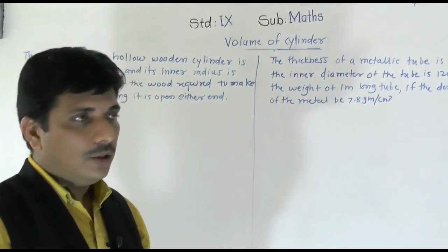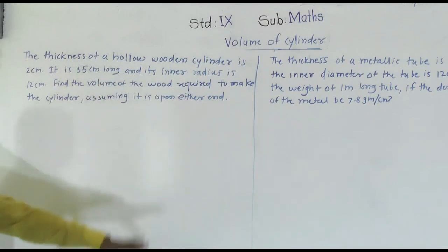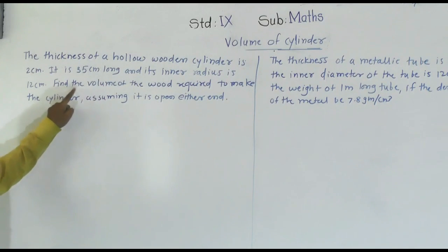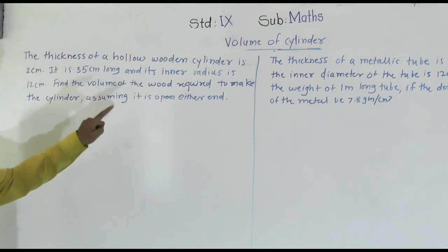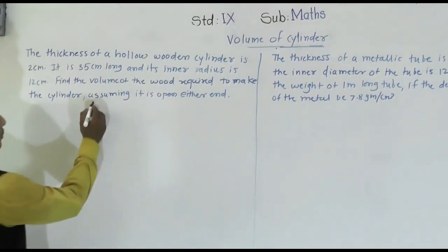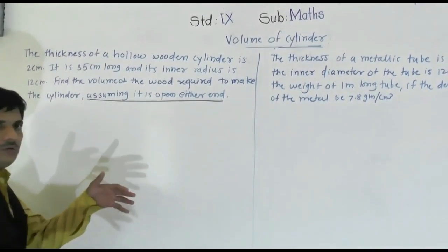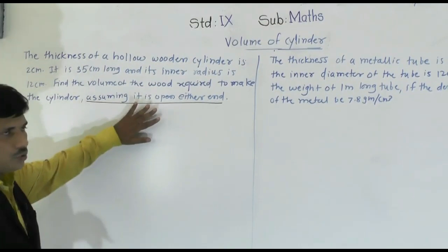Volume of cylinder. The first problem: the thickness of a hollow wooden cylinder is 2 centimeters, it is 35 centimeters long, and its inner radius is 12 centimeters. Find the volume of the wood required to make the cylinder. We have to find out the volume, assuming it is open on one side. If it is open from both sides, we cannot find out the volume.